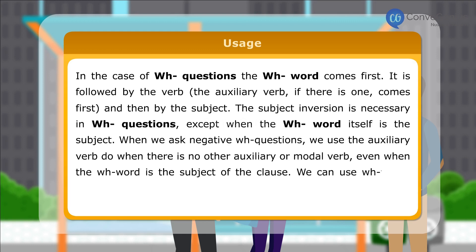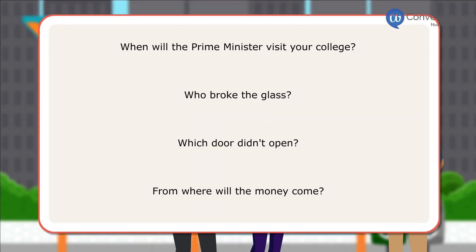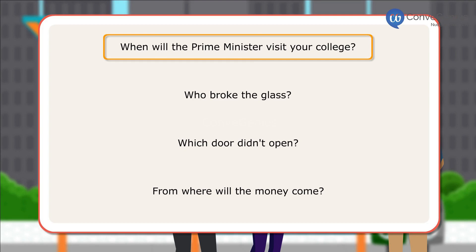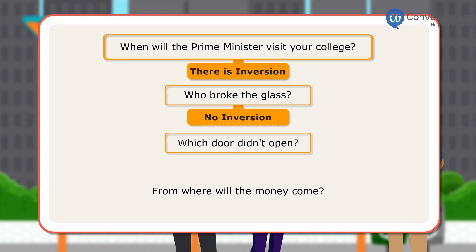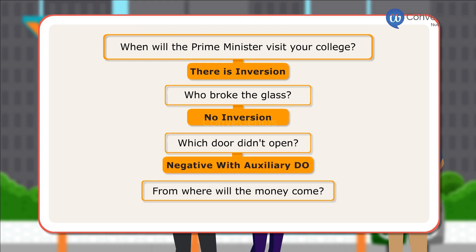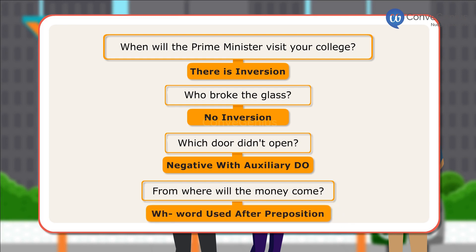We can use WH-words and phrases after prepositions in more formal questions. Let us look at a few examples. When will the Prime Minister visit our college? — There is inversion. Who broke the glass? — No inversion. Which door didn't open? — Negative with auxiliary do. From where will the money come? — WH-word used after preposition.